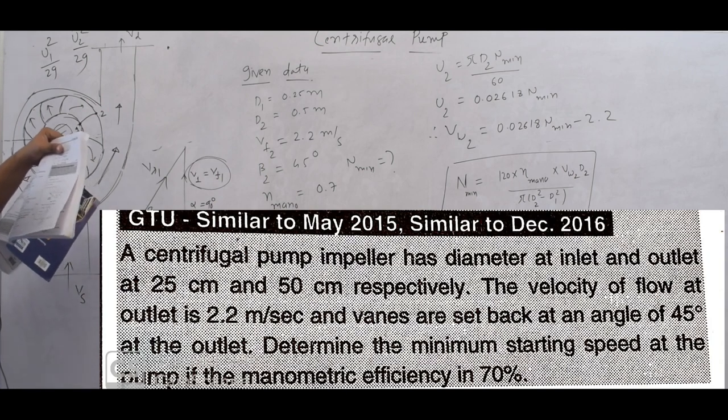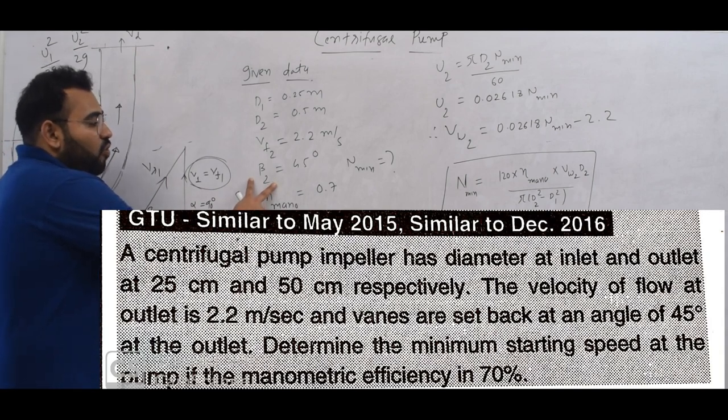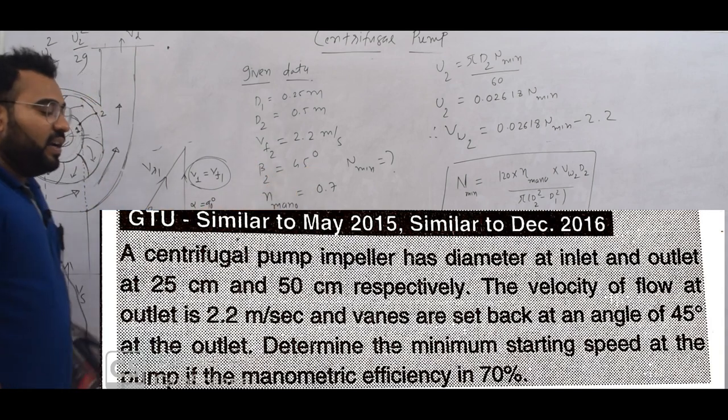Vanes are set back at an angle of 45 degrees at outlet. So 45 vane angle beta, and at outlet beta 2, beta 2 equals 45 degrees.